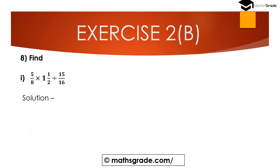Question number 8, first bit: Find (5/8 × 1 1/2) ÷ 15/16. We start by converting the mixed fraction: 2 multiplied with 1 is 2, 2 plus 1 is 3, so 3/2 is the improper fraction. Then we have division of 15/16.